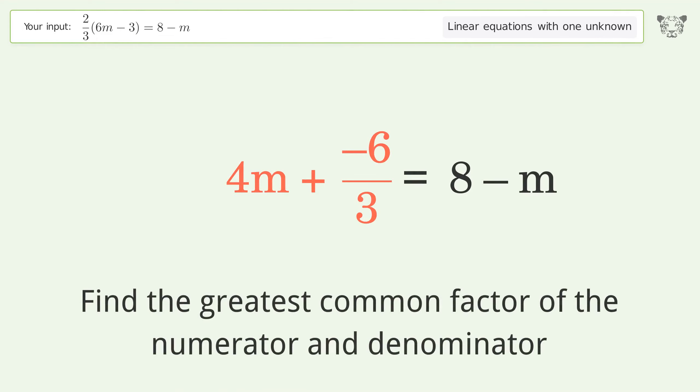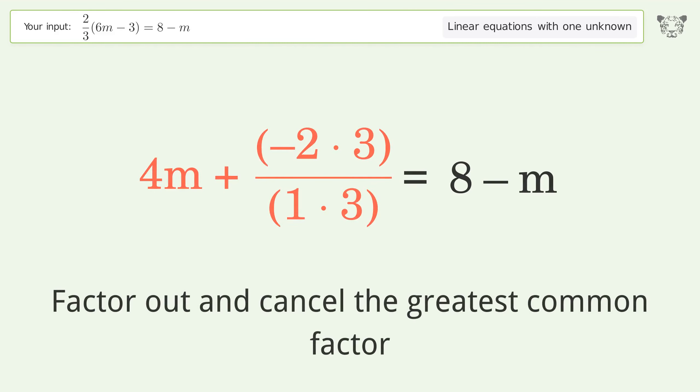Simplify the fraction. Find the greatest common factor of the numerator and denominator. Factor out and cancel the greatest common factor.